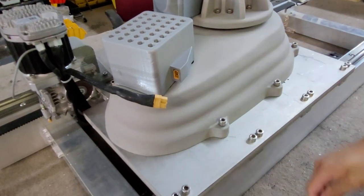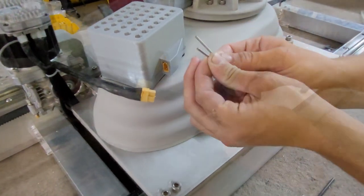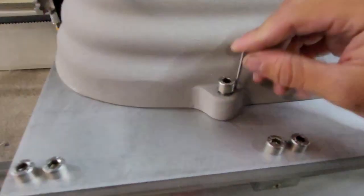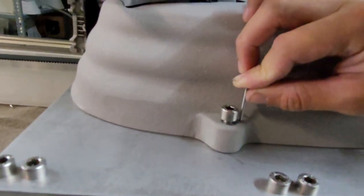With the bolts loose, we will now insert the alignment pins. Insert the pin as shown here and wiggle the printer back and forth until it slides down.